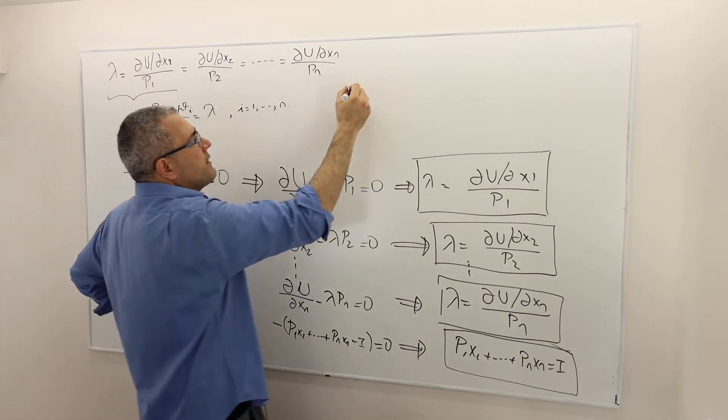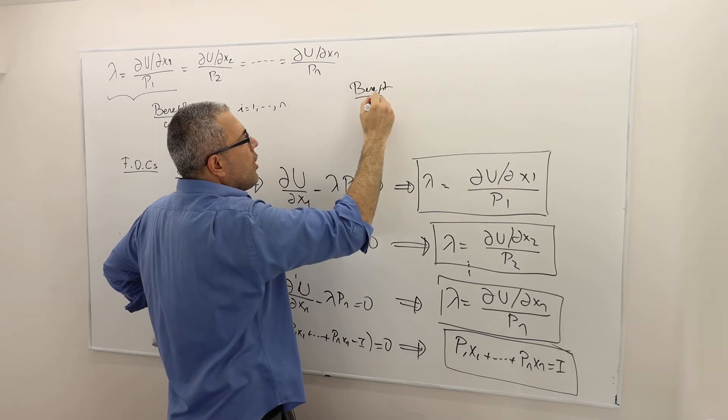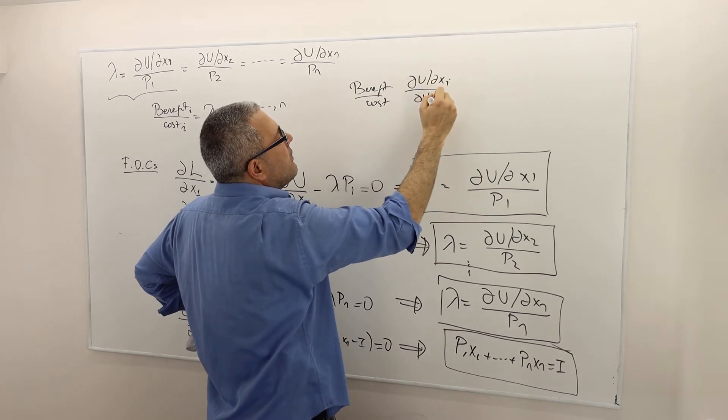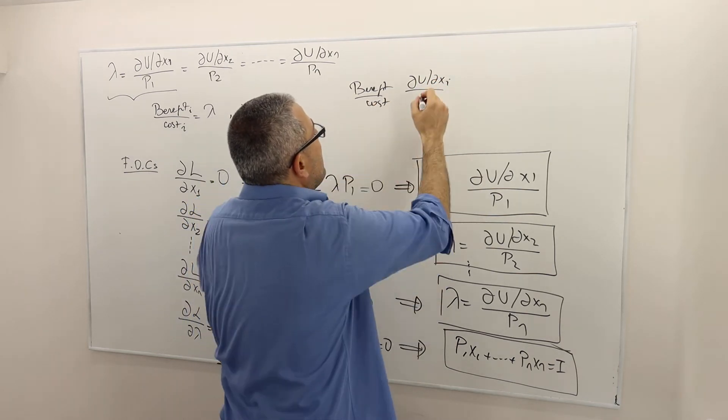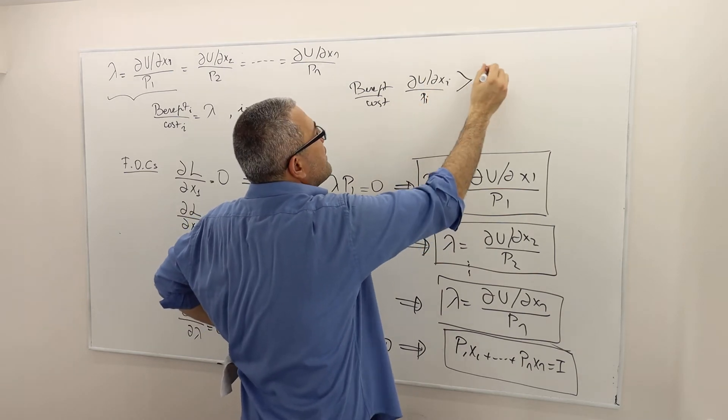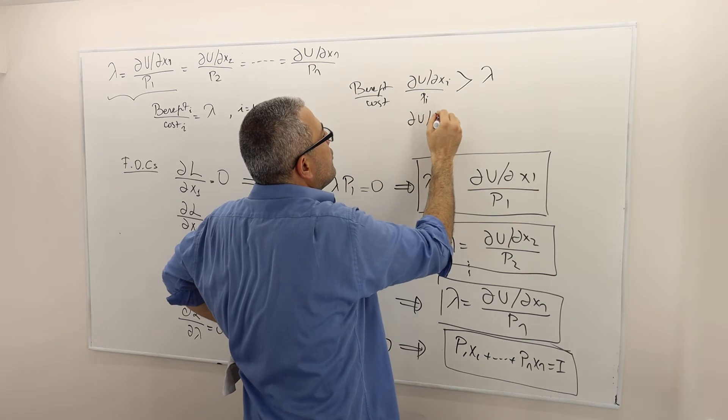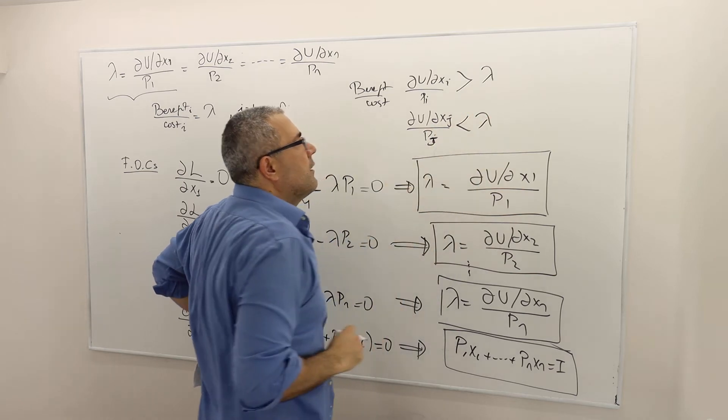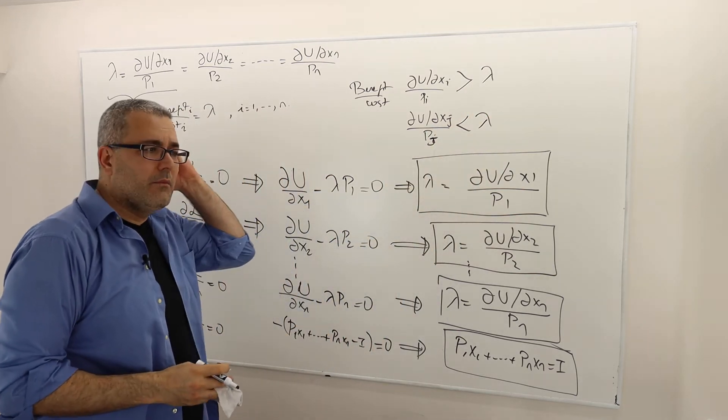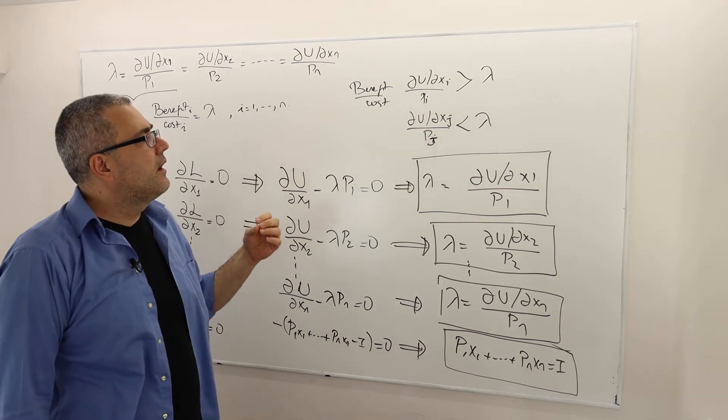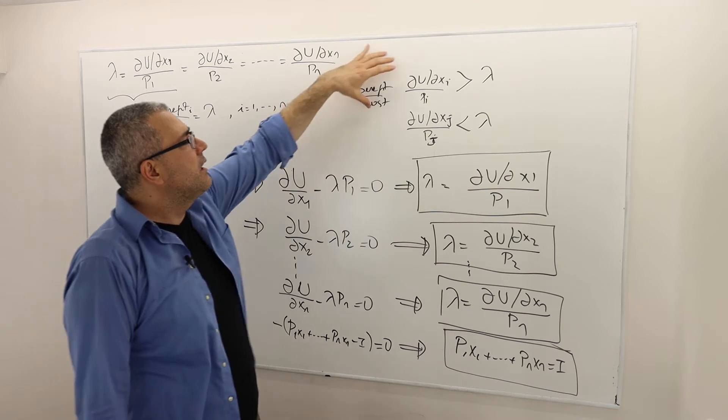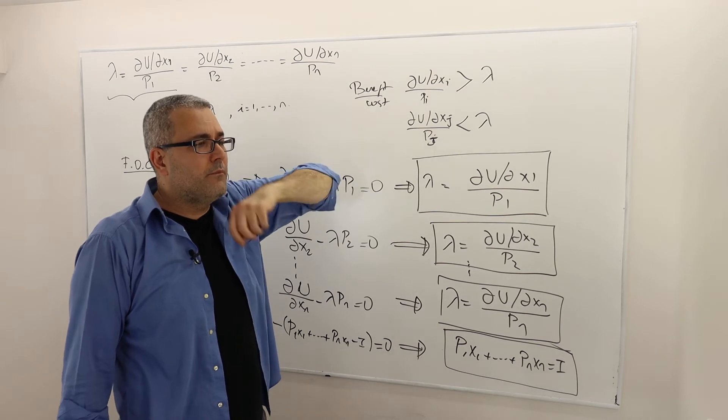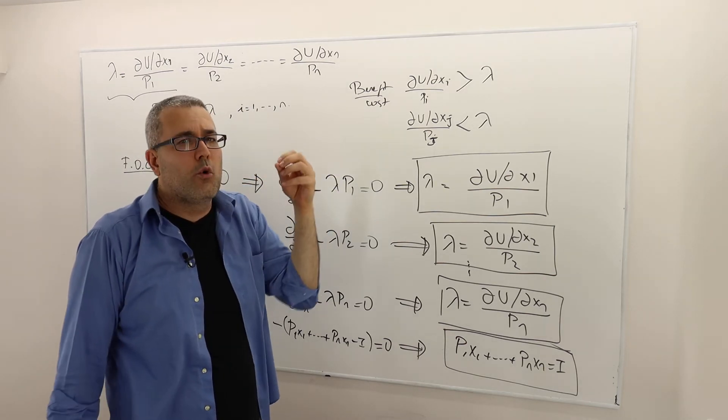Well, why is that? So suppose, for example, the benefit cost ratio, which I mean del u del xi divided by pi, let's say this is greater than lambda, but then there is some good xj where the benefit cost ratio, del u del xj divided by pj, is less than lambda. So what does that mean? Well, that means I cannot have achieved or found the optimal point because here, this benefit cost ratio is greater than lambda. So that means if I consume a little bit more, I'm going to get more benefit.